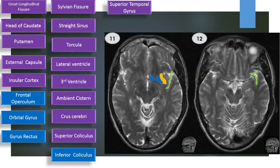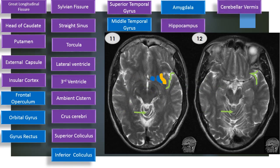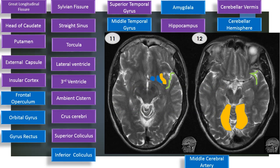Superior temporal gyrus. Middle temporal gyrus. Amygdala. Hippocampus. Cerebellar vermis. Cerebellar hemispheres. Middle cerebral artery. And posterior cerebral artery. Thank you.